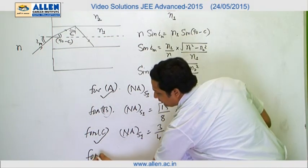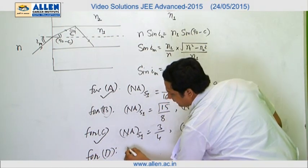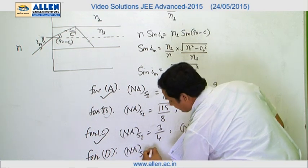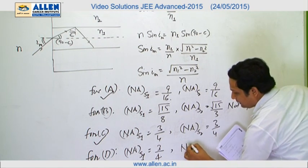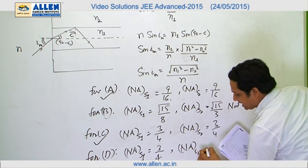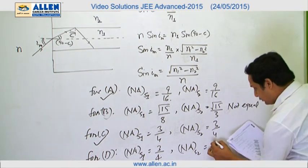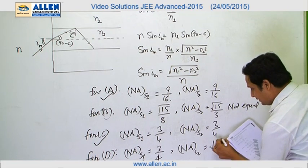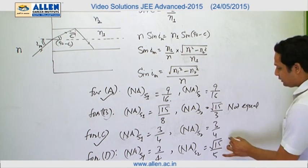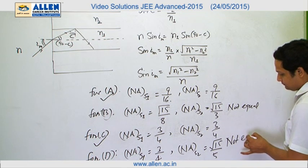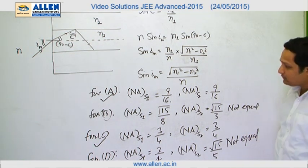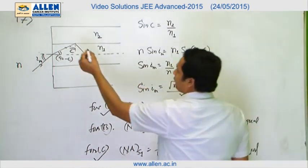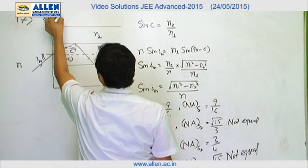For option D, NA for S1 comes out to be 3/4 after solving. And NA for S2 comes out to be √15/5, which is not equal. So the answer will be A and C. For question number 17, the answer is A and C.